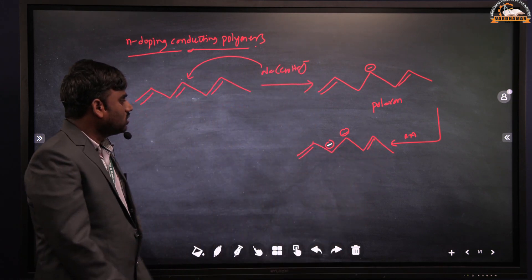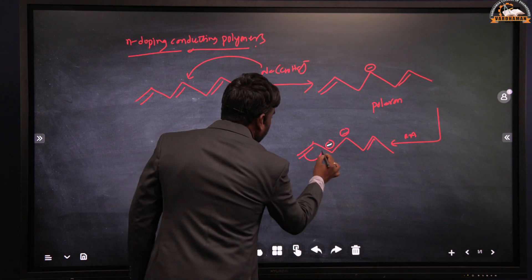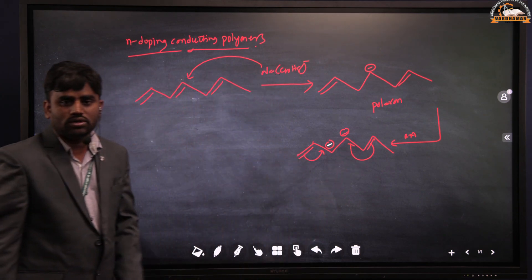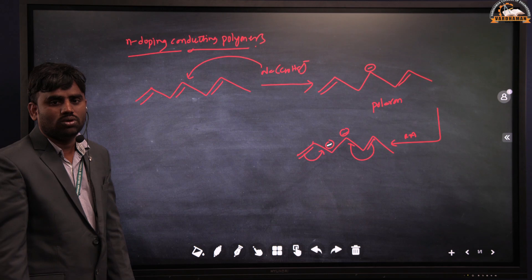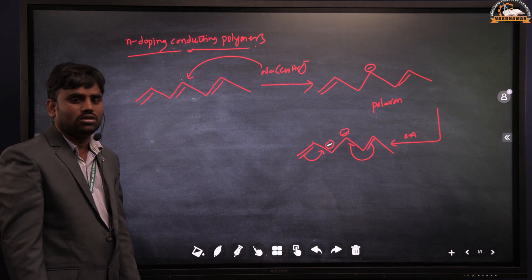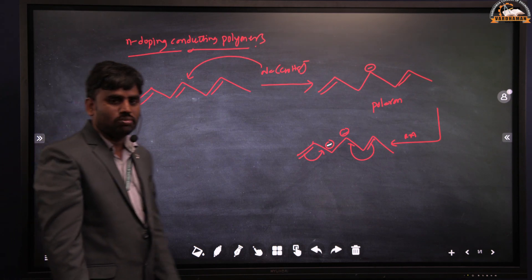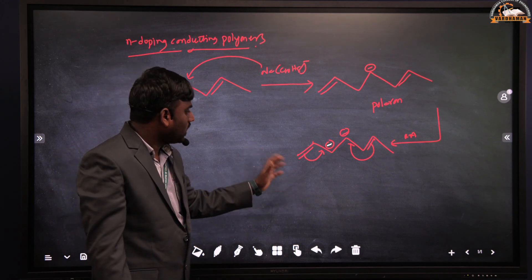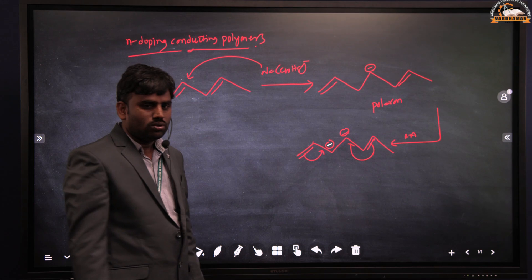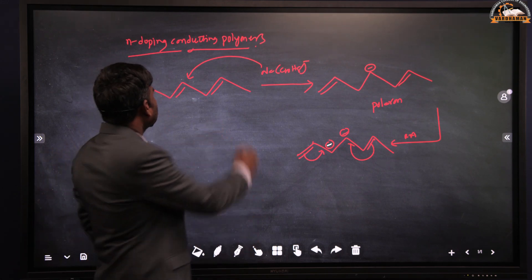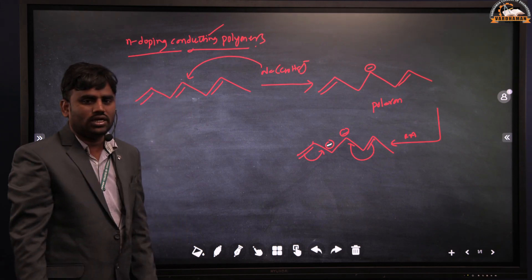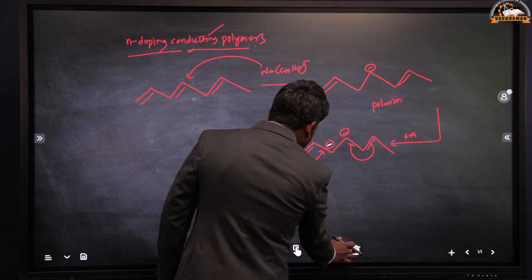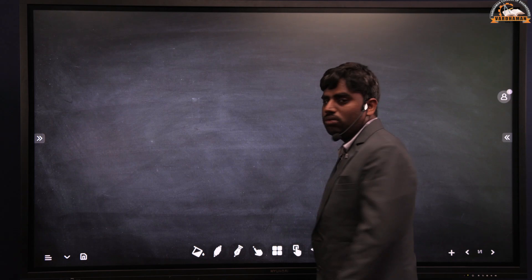Once the negative charge forms, these electrons move continuously throughout the backbone of the polymer chain and the polymer exhibits conductance. This property is known as n-doping conducting polymers. While adding the reducing agent or Lewis base, negative charge forms on the backbone of the polymer chain, and this negative charge along with pi electrons moves continuously — the polymer exhibits conductance as n-doping conducting polymers.